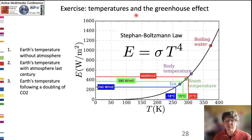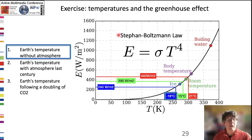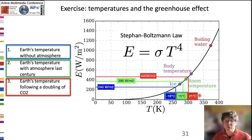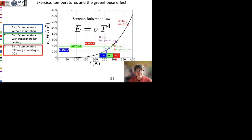The last exercise relates the average Earth temperature T to its infrared emission E through the Stefan law, represented with a graph. Without atmosphere, the balance flux of 240 watts per square meter corresponds to an Earth temperature of minus 18 degrees Celsius. The temperature of the pre-industrial period is 15 degrees Celsius, thanks to the natural greenhouse effect. The doubling of CO2 concentrations would lead to an increase of 5 or 6 degrees Celsius in the Earth's temperature.